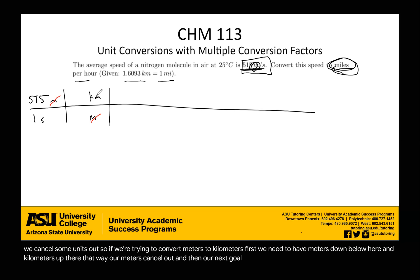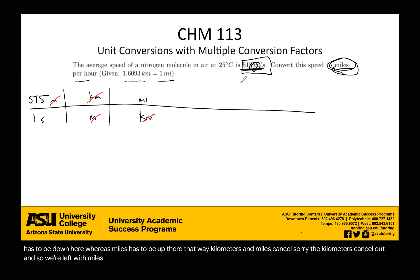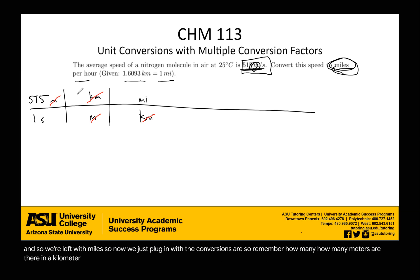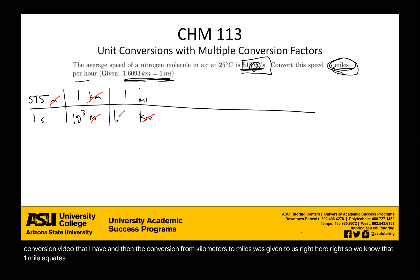Our next goal is to convert kilometers to miles, so kilometers has to be on the bottom and miles on top — that way the kilometers cancel out and we're left with miles. Now we plug in the conversions: one kilometer is 10³ meters. And the conversion from kilometers to miles was given to us — one mile equals 1.6093 kilometers. So we have now converted our meters to miles.